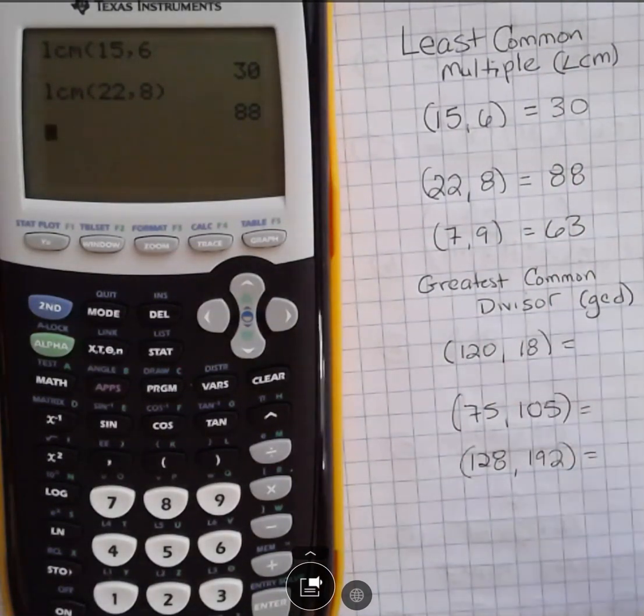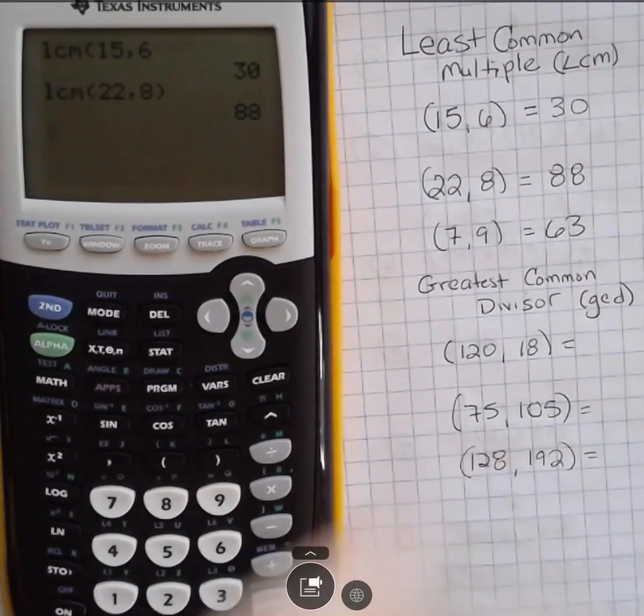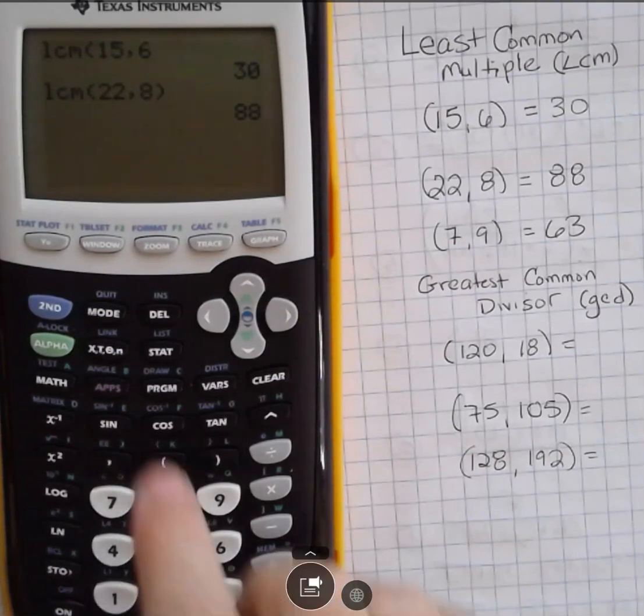Okay, greatest common divisor. That is the greatest number that goes into both of those. They don't go into the number. The number goes into them. I'm going to do the same thing here.